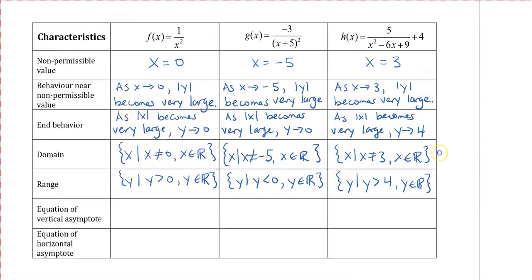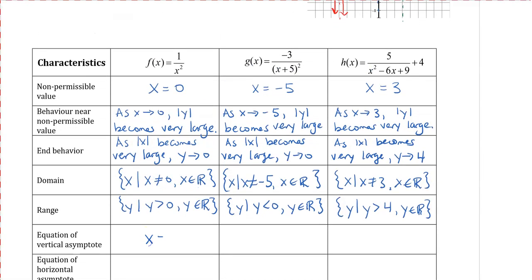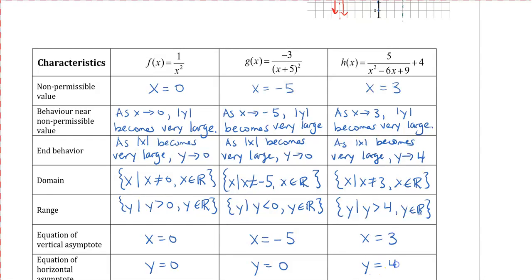The equation of the vertical asymptote for the blue graph is x = 0, and the horizontal asymptote is y = 0 — that's the x and y axes. For the red graph, the vertical asymptote is x = −5 (from the domain restriction), and since the graph hasn't moved up or down, the horizontal asymptote is still y = 0. For h(x), the domain shows x ≠ 3, so the vertical asymptote is x = 3, and since the graph moved up 4, the horizontal asymptote is y = 4.